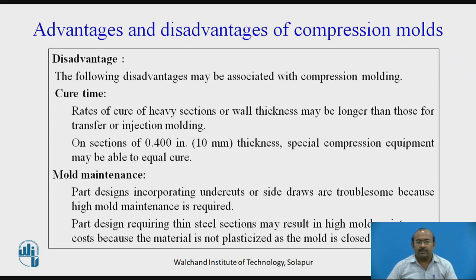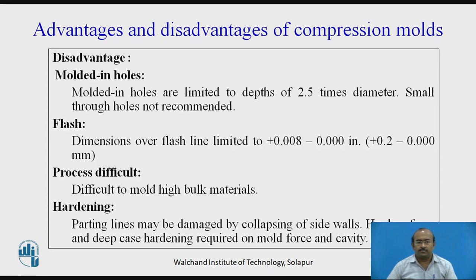Disadvantages: Cure time — rate of cure for heavy sections or wall thickness may be longer than for transfer or injection molding; on sections of 0.400 inch (about 10 mm thickness), special compression equipment may be able to equal cure. Mold maintenance and part design — incorporated undercuts or side walls are troublesome because high mold maintenance is required. Molded-in holes — limited to a depth of 2.5 times the diameter; small diameter holes are not recommended. Flash — dimensions over the flash line limited to plus 0.008 to 0.000 inch (0.2 to 0.00 mm); process is difficult for high bulk materials.